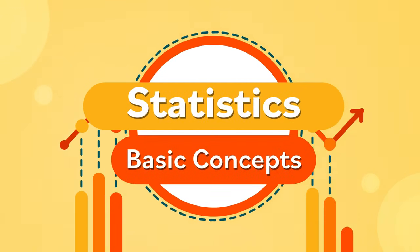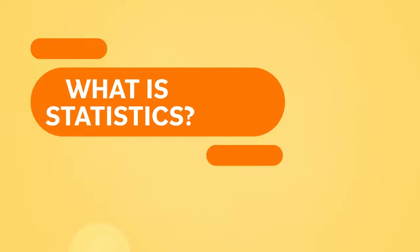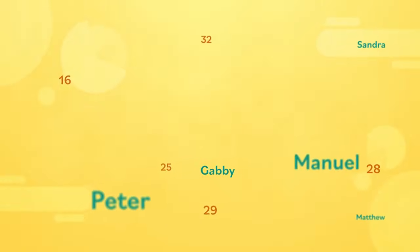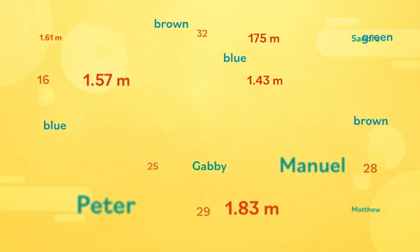Statistics – Basic Concepts. What is statistics? Let's say you have a lot of information, such as names, ages, heights, and eye color of different people.